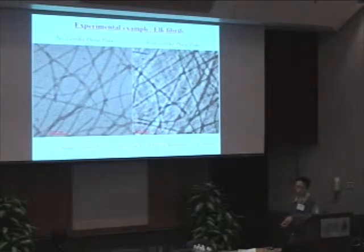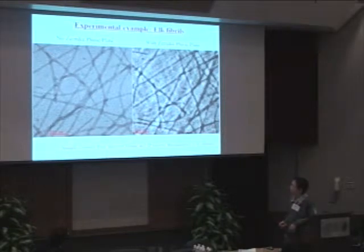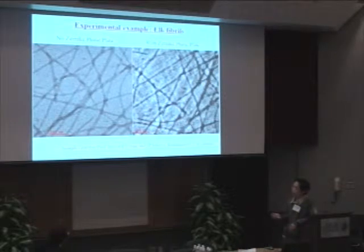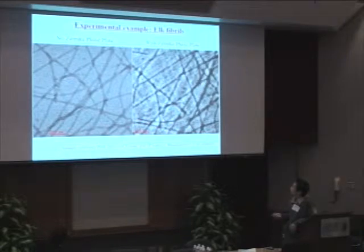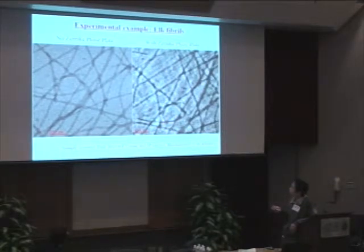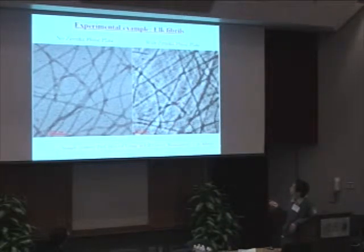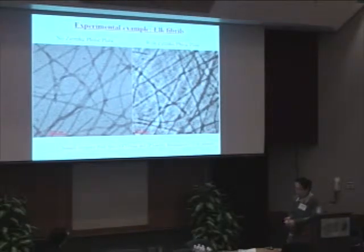For biological samples and polymer samples where people have a problem getting good contrast, we are developing a phase plate to place in the column of the two microscopes which can improve the contrast. It's a very preliminary result, but you can see that with the phase plate the contrast has been improved a lot. This is a sample of elk fabric from a group at the University of Alberta.